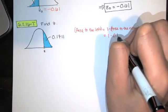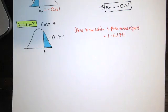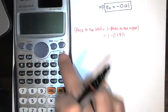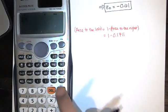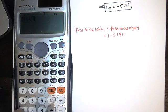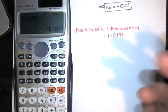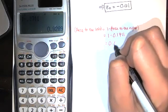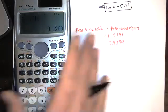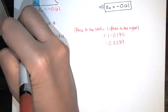That's just 1 minus this 0.1711. We use the calculator for the arithmetic. And we get 0.8289 as the area to the left.